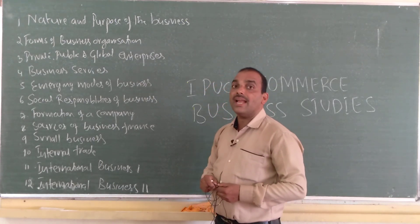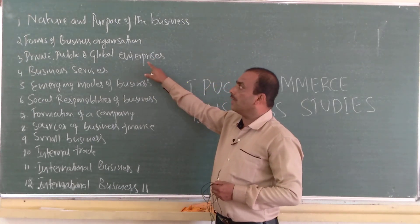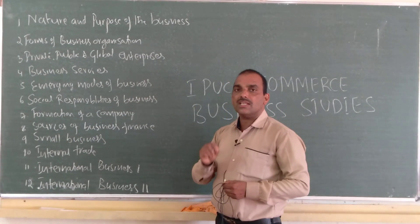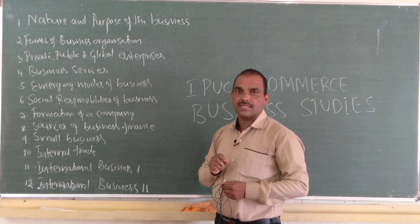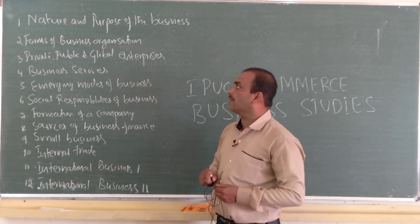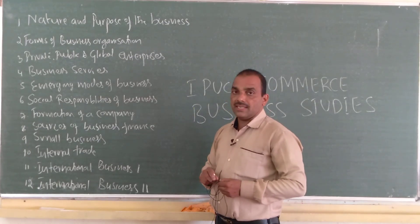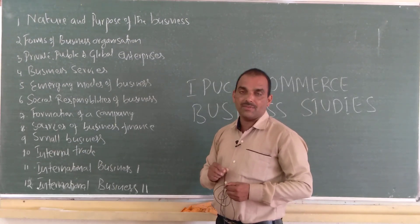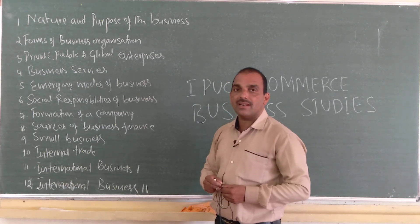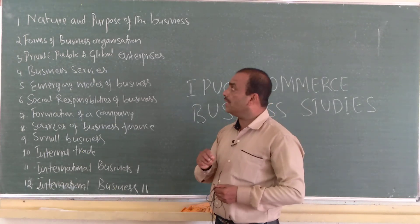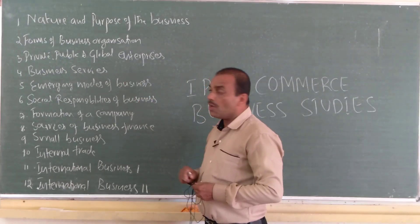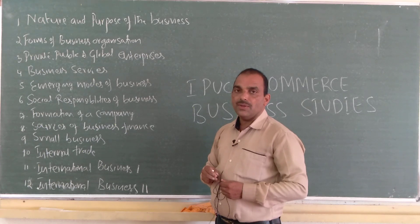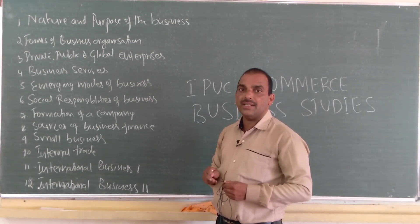The third chapter is Private, Public and Global Enterprise. Private means business owned by private individuals — it may be a sole trading concern or partnership firm. Public means business owned and managed by the government, for example government companies, departmental undertakings, or statutory companies — the various public sector enterprises. Global enterprise means those enterprises owned and managed across two or more countries.